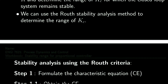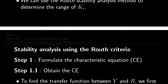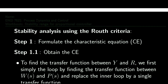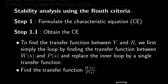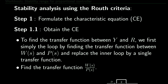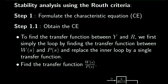We have learned about a four-step procedure to use the Routh criteria to analyze stability. The first step is to formulate the characteristic equation, so we'll go step by step to obtain it.